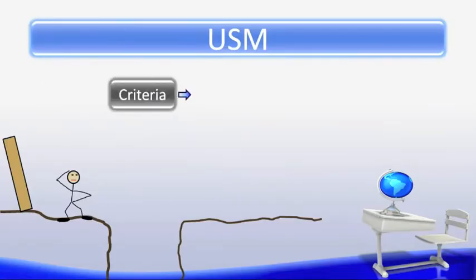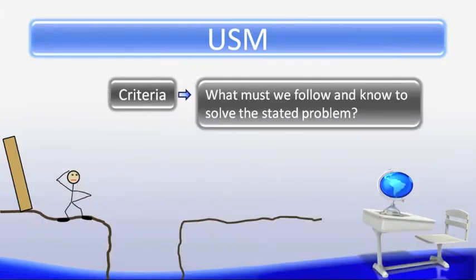The criteria lets us know what we can and cannot do, what we are allowed to use, how much time we have, etc. This step lets us know what our limits are. It is very important that we pay close attention to this step so we do not plan for something that we do not have available to us later on.